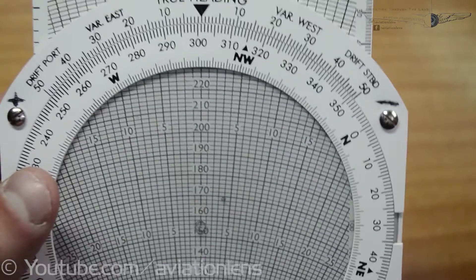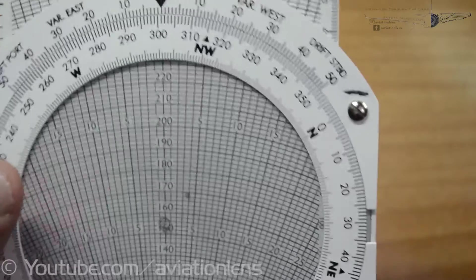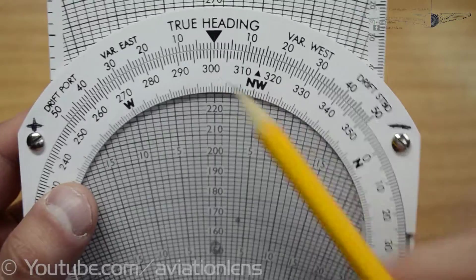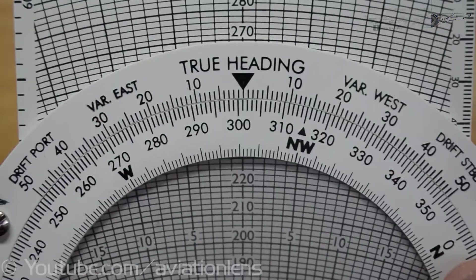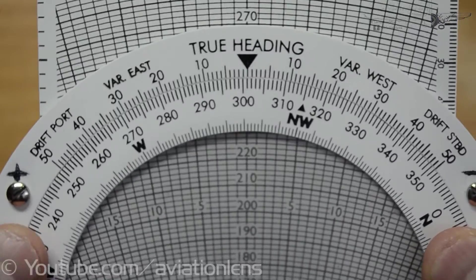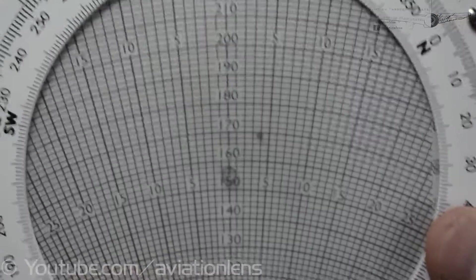So here the final answer is 301 degrees, and our ground speed here is 169.